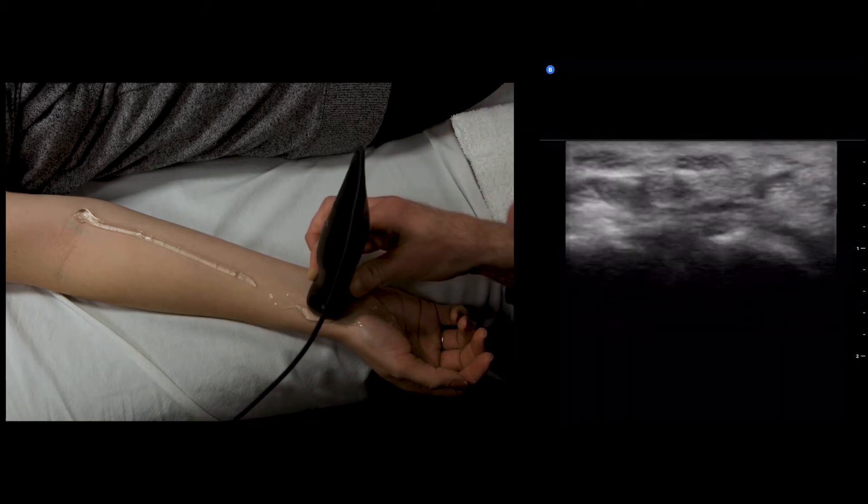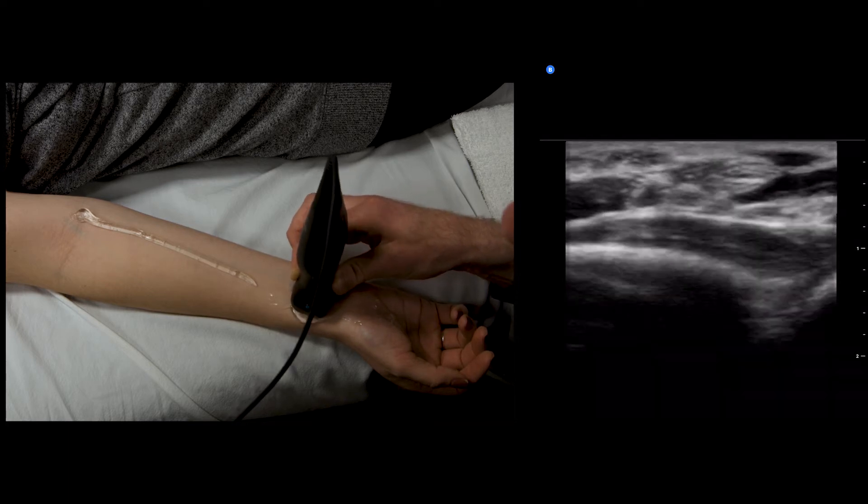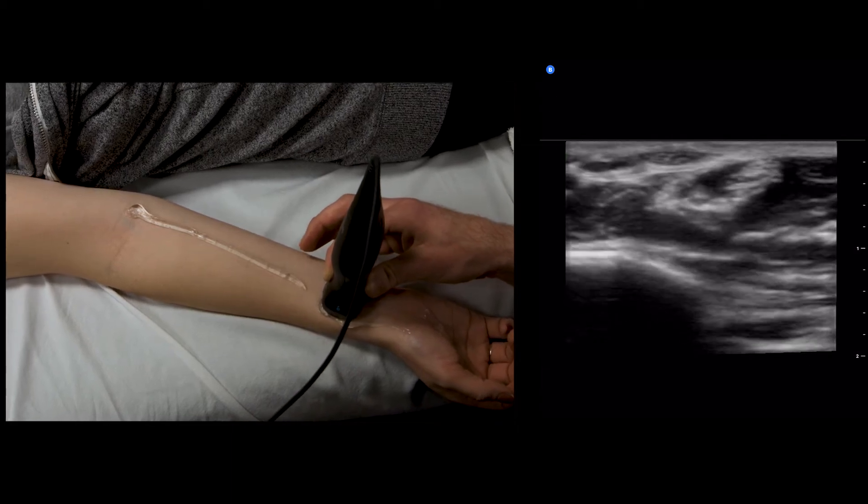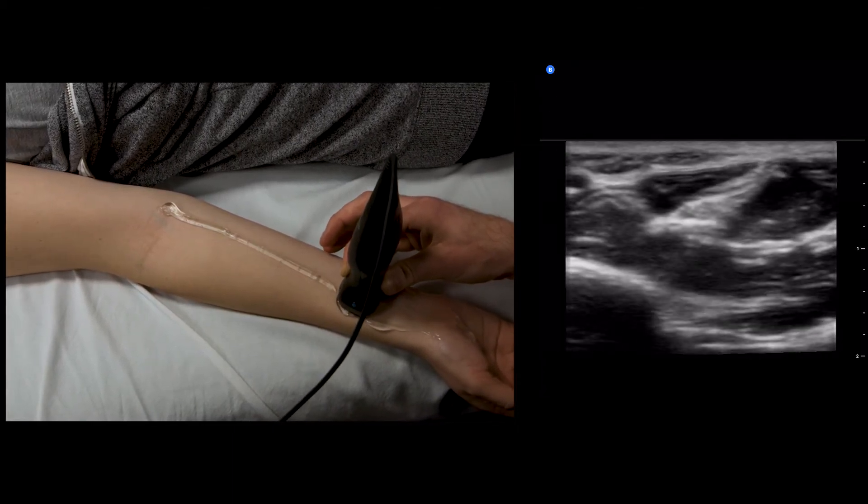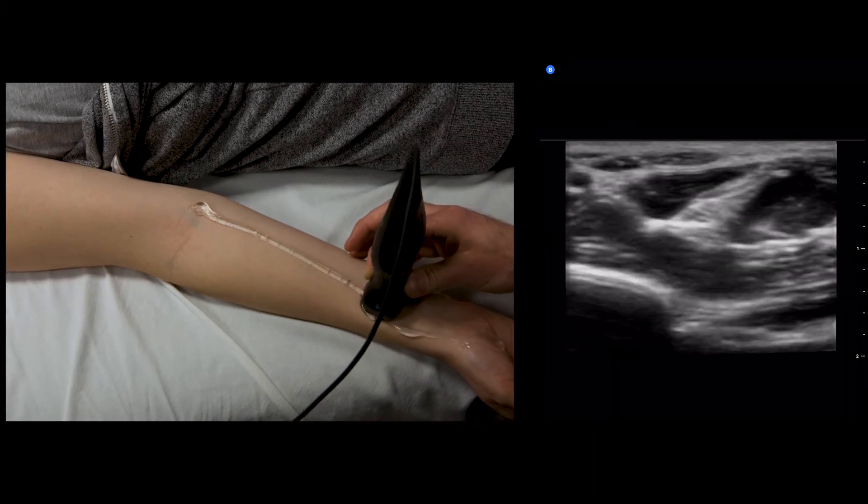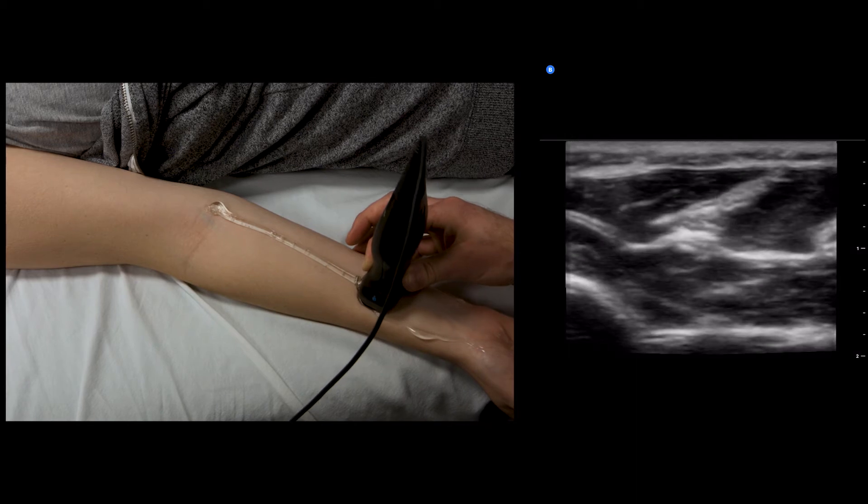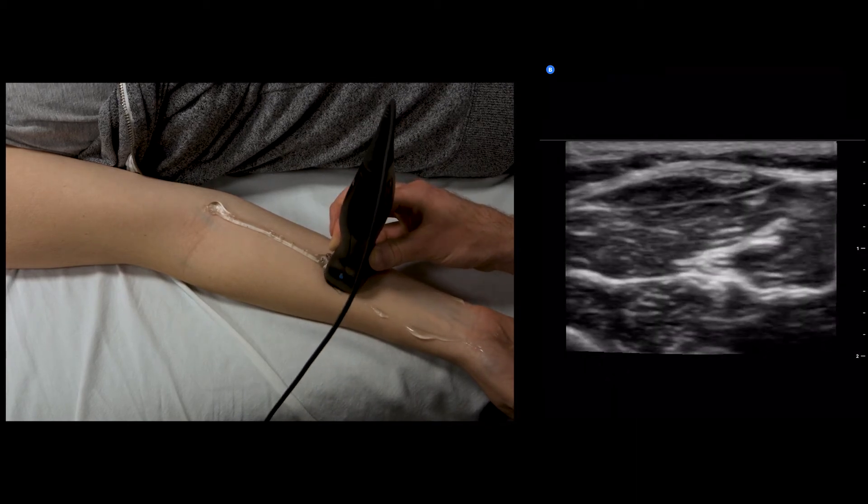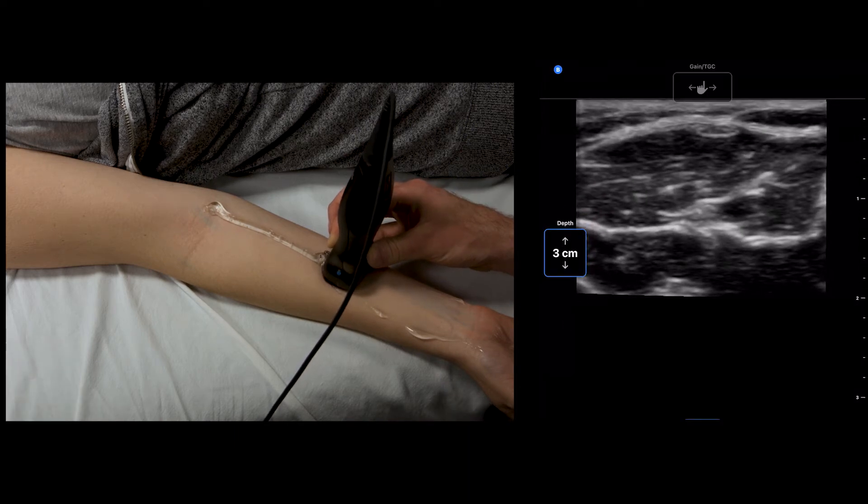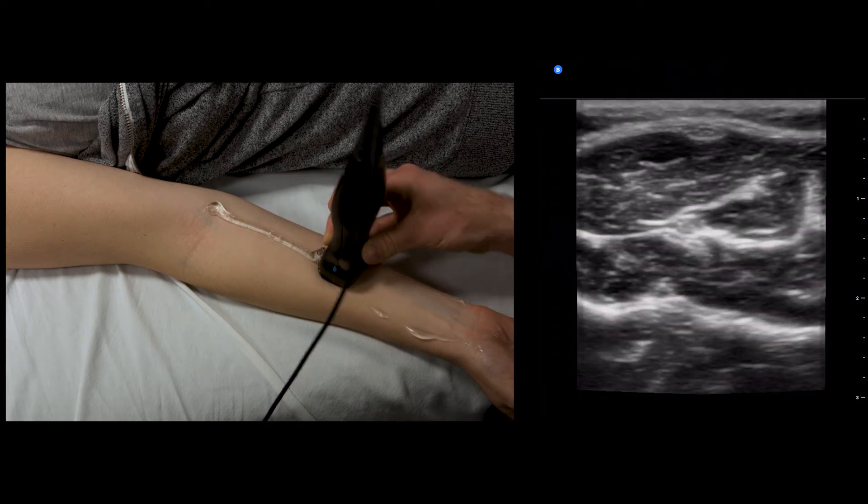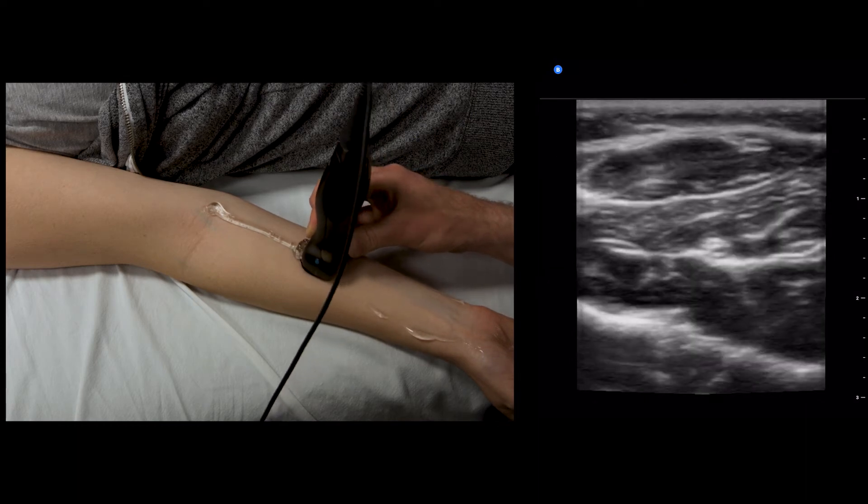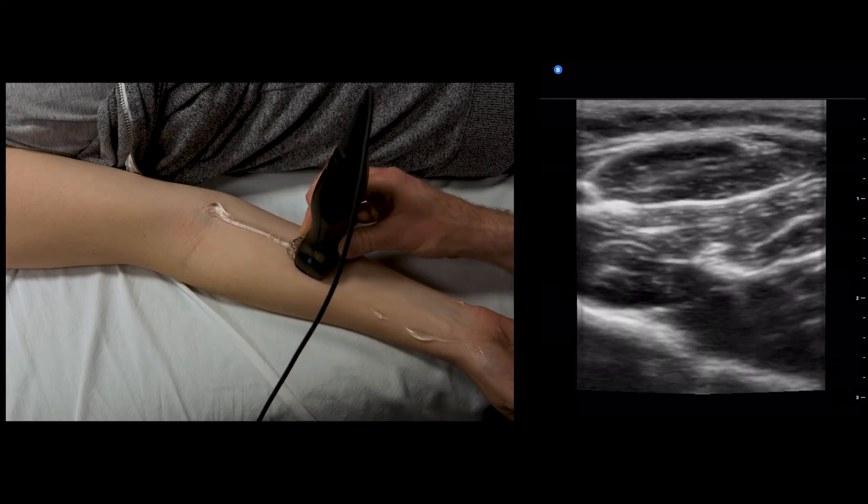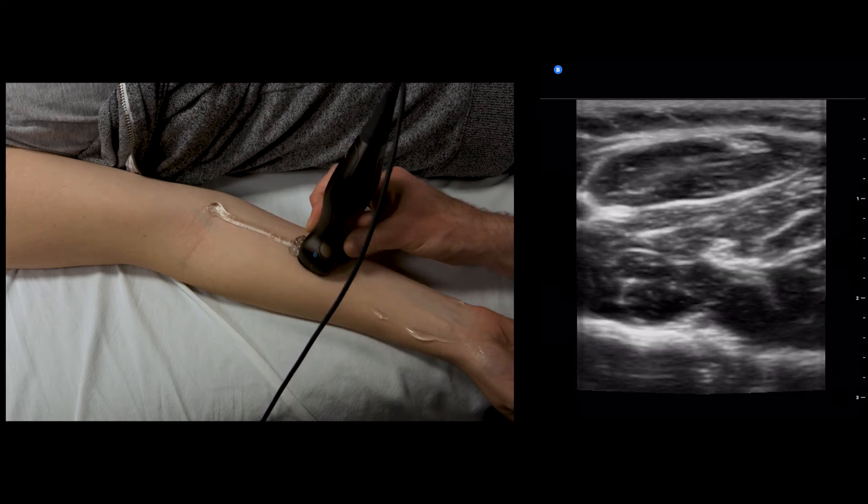Then we're going to follow the median nerve proximal. It's going to go radial, drop just deep to flexor carpi radialis, go underneath the flexor pollicis muscle belly, and then move medial to lie between the deep and superficial compartments. The median nerve is lying between the deep and superficial compartments. Just deep to the median nerve, you can see a pulsating structure.